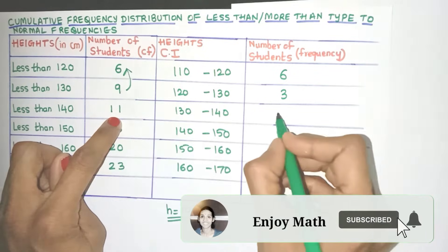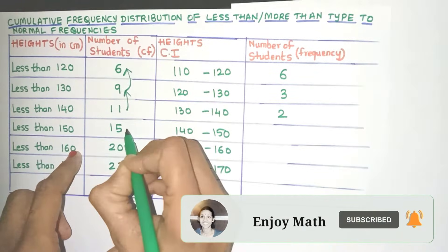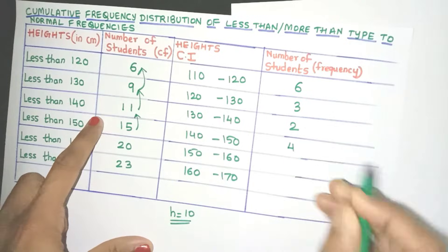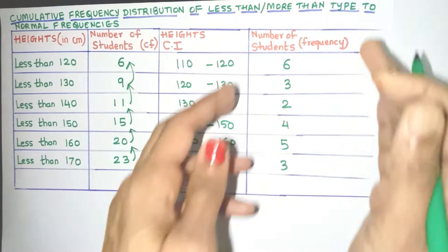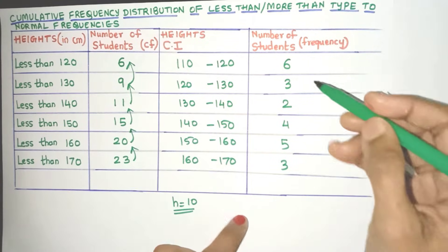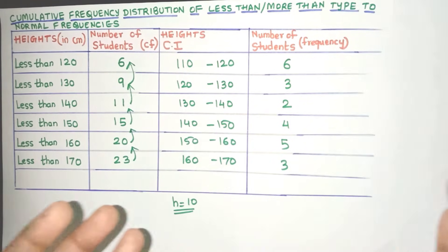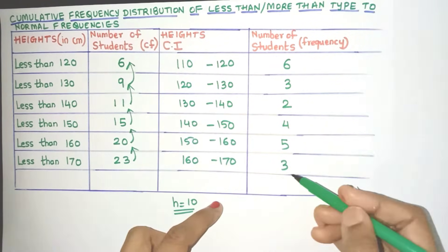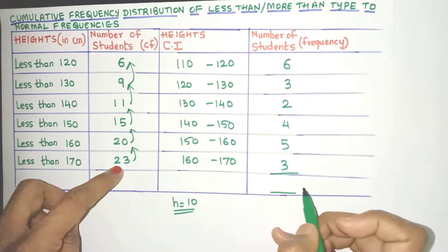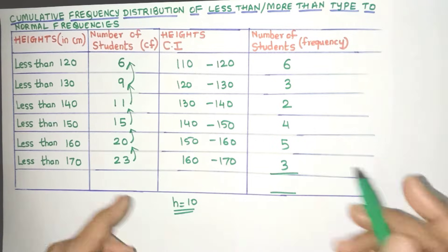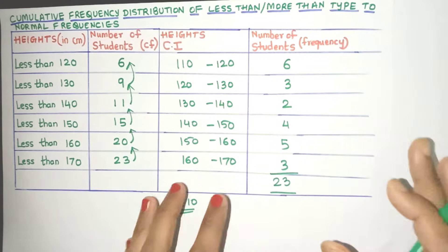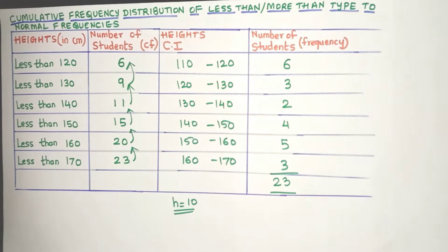Just need to apply this logic. So here we'll get 11 minus 9 which is 2. Okay. This way 15 minus 11, 4. 20 minus 15, 5. And this way we'll get all the frequencies. Now to verify if all the frequency values are correct, you can just add them up and you should get this cumulative frequency value at the bottom. So if you add them up, you will see that we'll get 23. That means our calculations are on the right track.